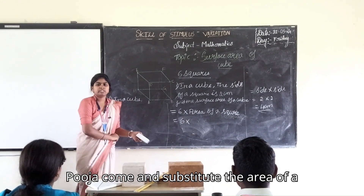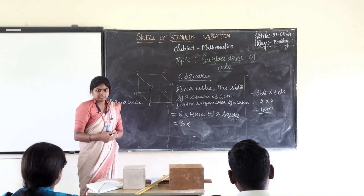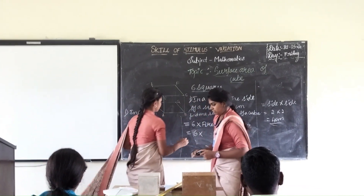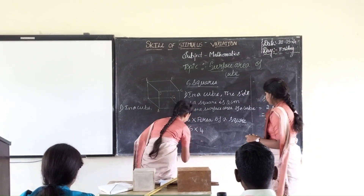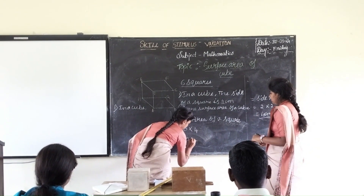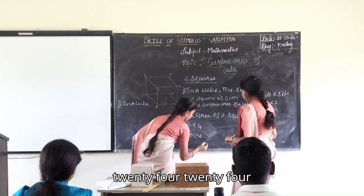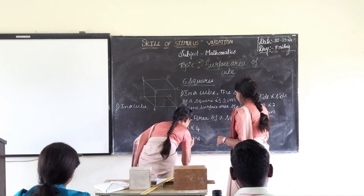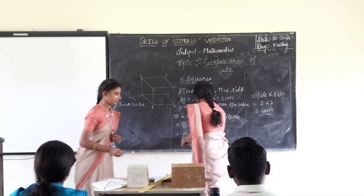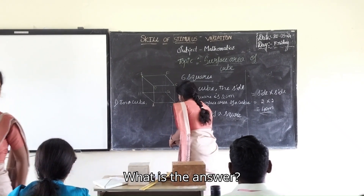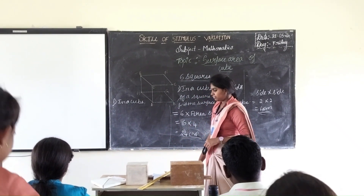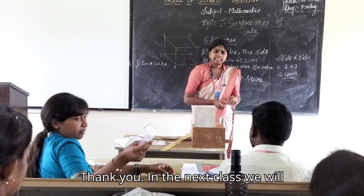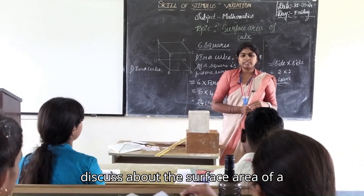Pooja, come and substitute the area of a square. 6 into 4 is 24. The surface area of the cube is 24 cm squared. Thank you. In the next class we will discuss about the surface area of a cuboid.